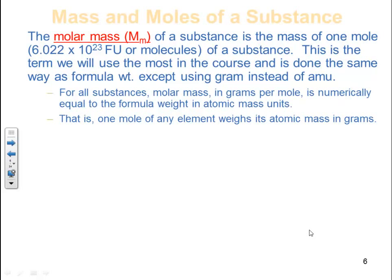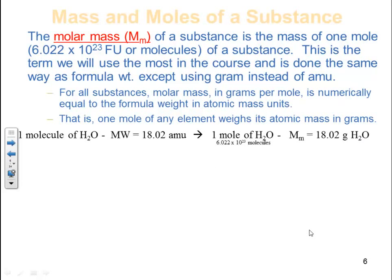For all substances, molar mass in grams per mole is numerically equal to the formula weight in atomic mass units — one mole of any element weighs its atomic mass in grams. For example, one molecule of water has a mass of 18.02 amu, but we can't deal with one molecule. A whole mole of water — 6.022 × 10²³ molecules — has a molar mass of 18.02 grams. We're essentially just changing the unit.